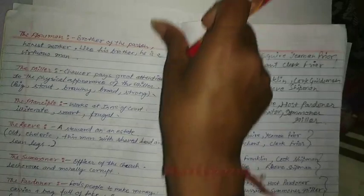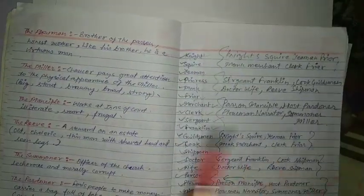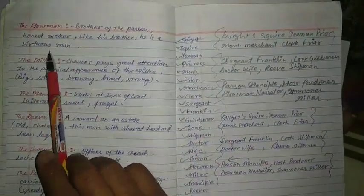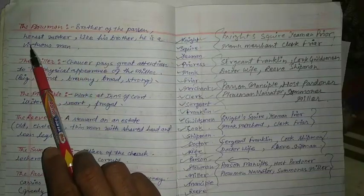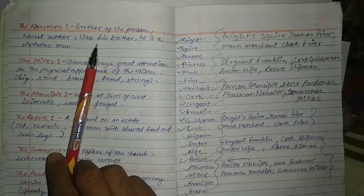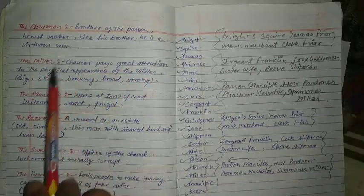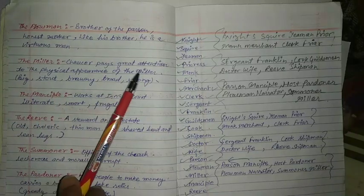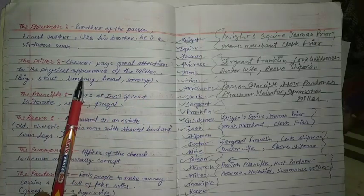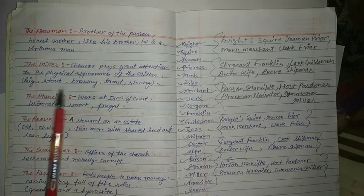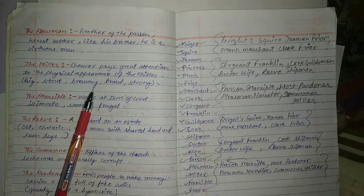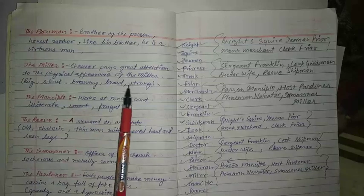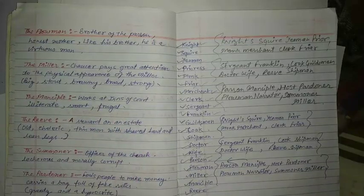The Plowman is the brother of the Parson and, like his brother, is an honest and virtuous worker. The Miller receives great attention from Chaucer regarding his physical appearance — he is big, stout, broad, and strong.